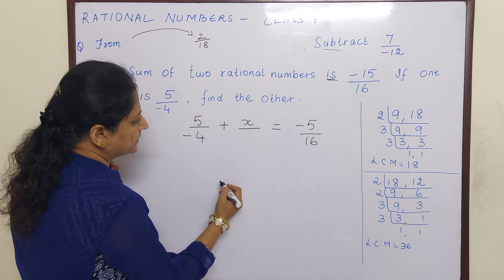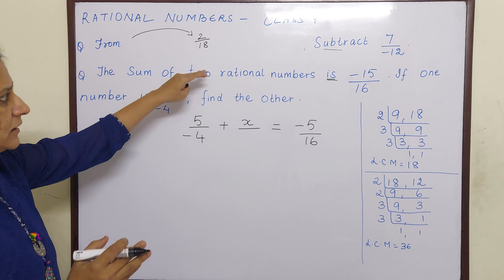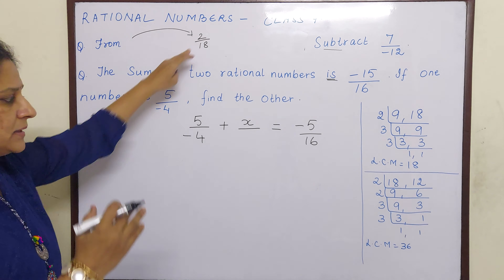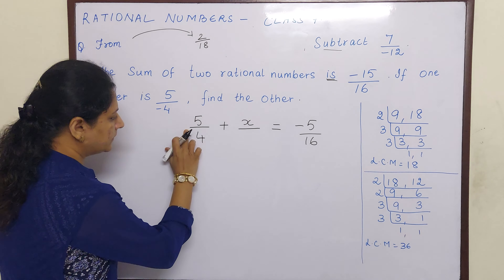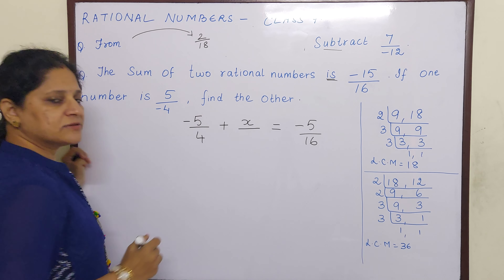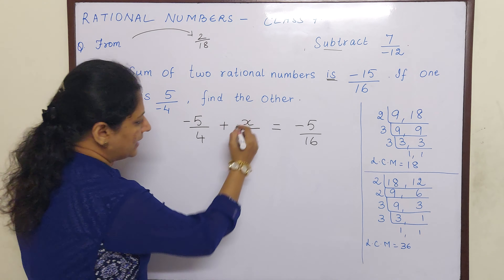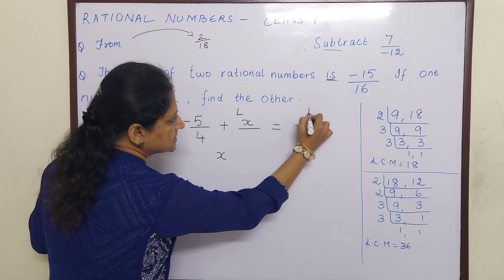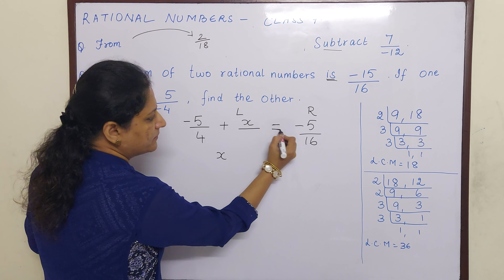Now we know children, sum means addition, so what we will do, we will put here an addition sign. Now before a number there should be only one sign, but there are two signs here. So we will make it into one sign — plus into minus is minus — 6 by 18.